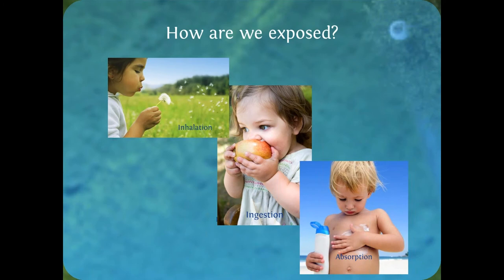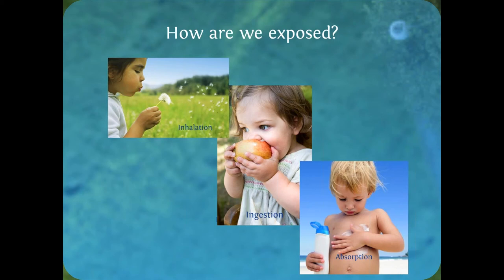I'm going to focus on industrial chemicals found in the products around us. Catherine focused on food, and we'll hear some air toxics from Mara and Alexis later. There are a number of different ways we can be exposed to chemicals — I've shown three of them here, and there's a fourth. Inhalation: if you're thinking about air toxics or volatile organic compounds, things like radon. Ingestion: obviously through food — you might think of children ingesting lead-contaminated dust or paint chips, or contaminated water. And skin absorption.